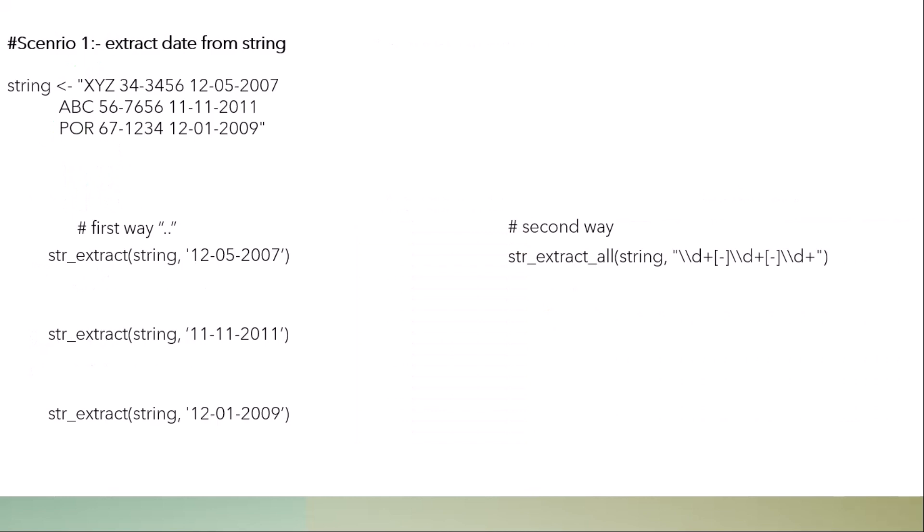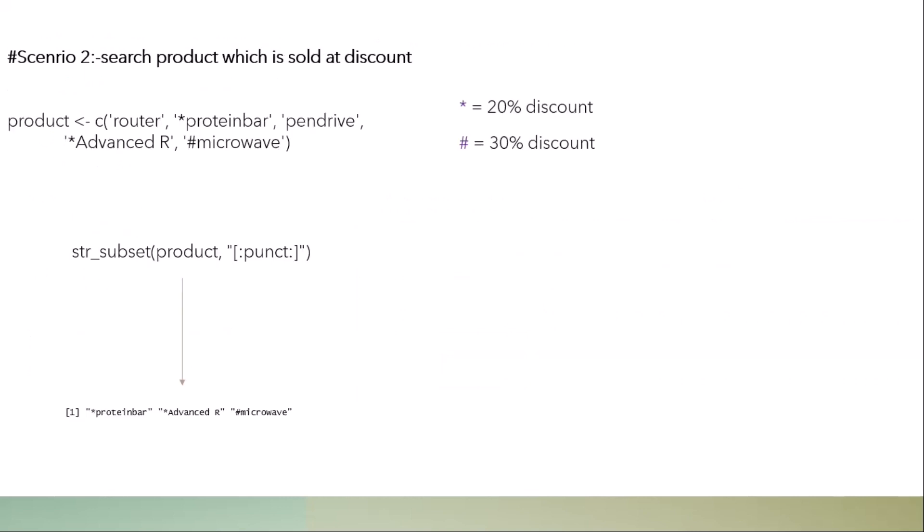This is scenario number two: we want to extract a date from a string. Using the simple method, you would have to type three lines of code. If the dataset is very large, you would need many more lines. Instead, you can use the regular expression for digits, which is backslash D. You just write that expression and you get all the dates from the string.